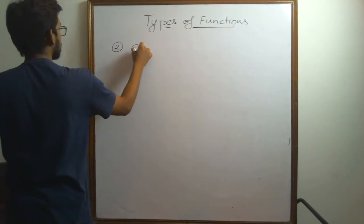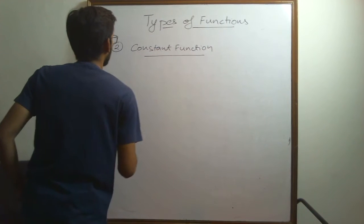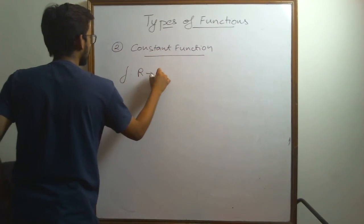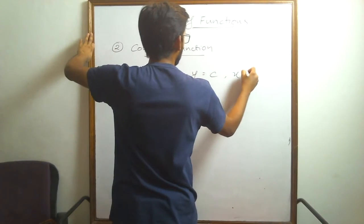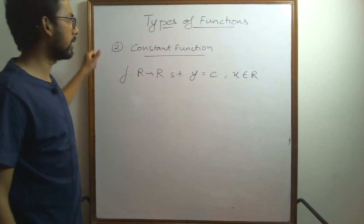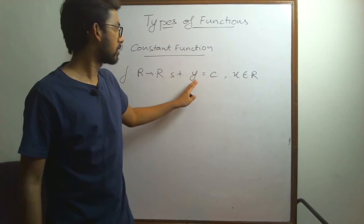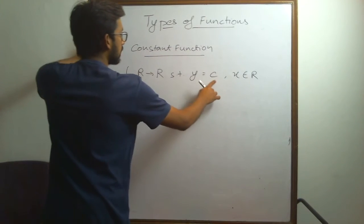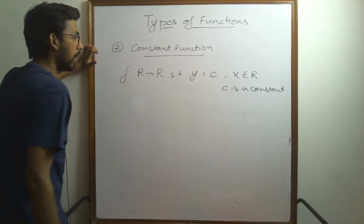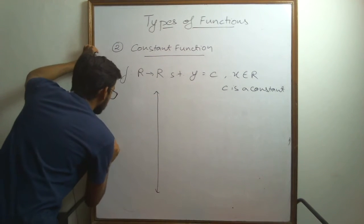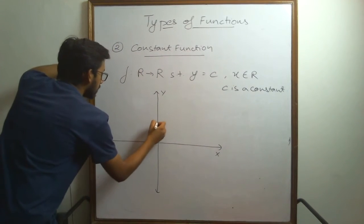The second type of function is the constant function. If I define a function f from R to R such that y is equal to c for all x belonging to real numbers, this is known as a constant function because the dependent variable is independent of x — it does not depend on x at all. y is always equal to c, which is a constant.